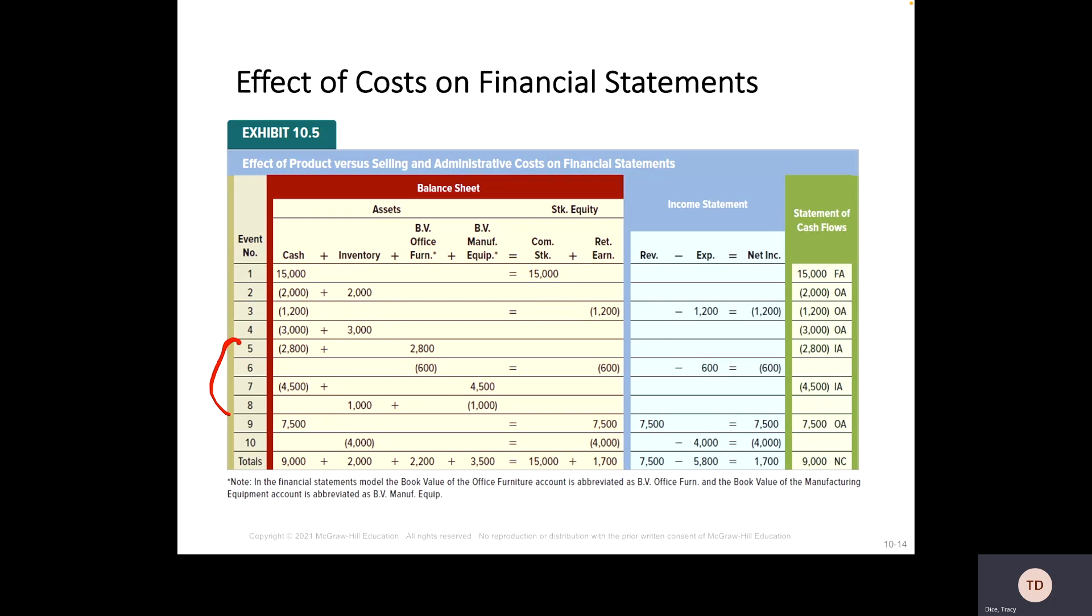Event 5 is buying office equipment and it's for your sales and administrative staff. Because of that, when we depreciate it, they use straight line depreciation. So in the book on page...